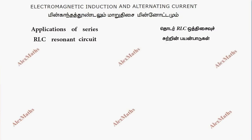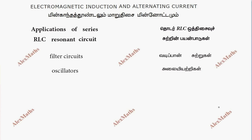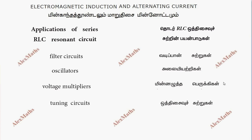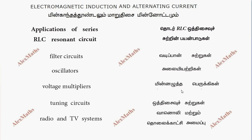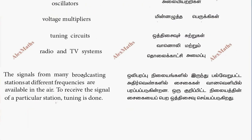Moving on to applications of the series RLC resonance circuit: filter circuits, oscillators, voltage multipliers, and most importantly tuning circuits in radio and TV systems. Among the RLC resonance circuit applications, it is used to select signals from a particular broadcasting station among many signals at different frequencies.